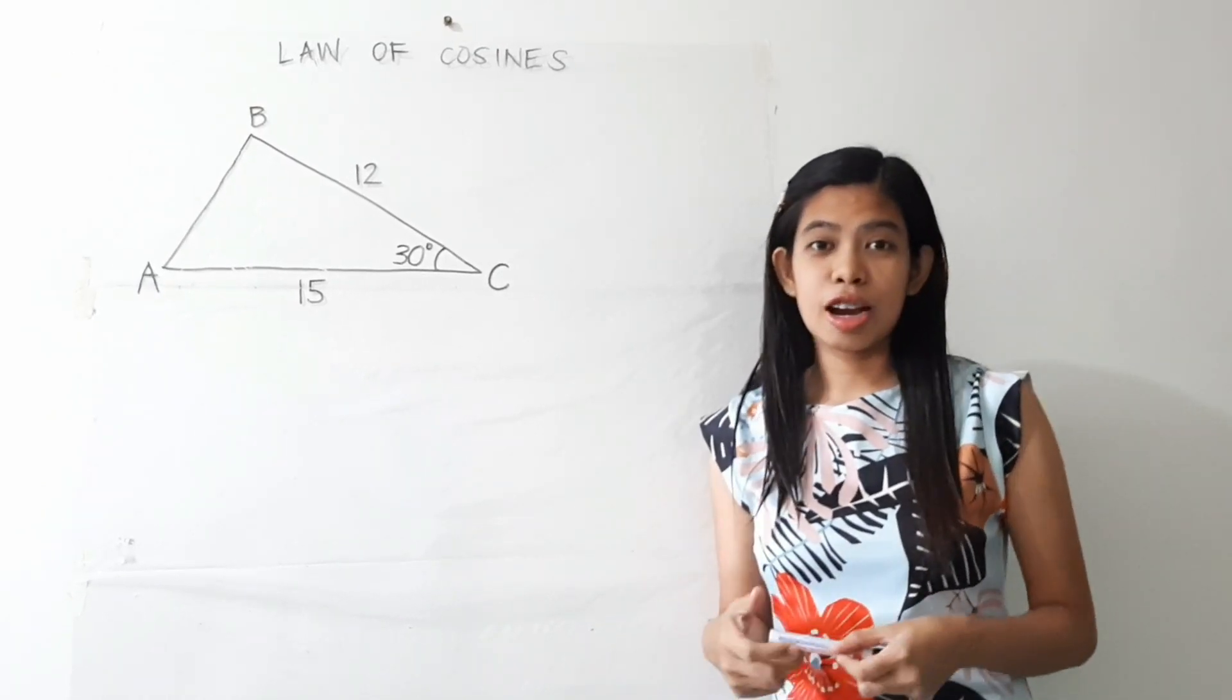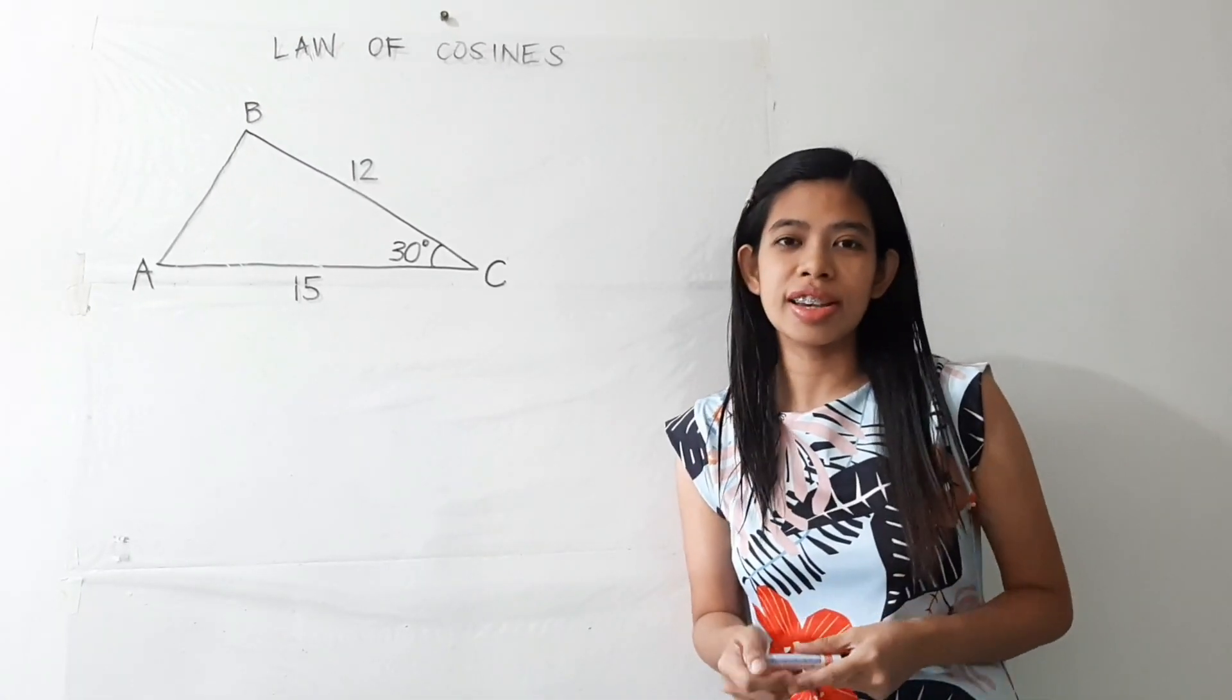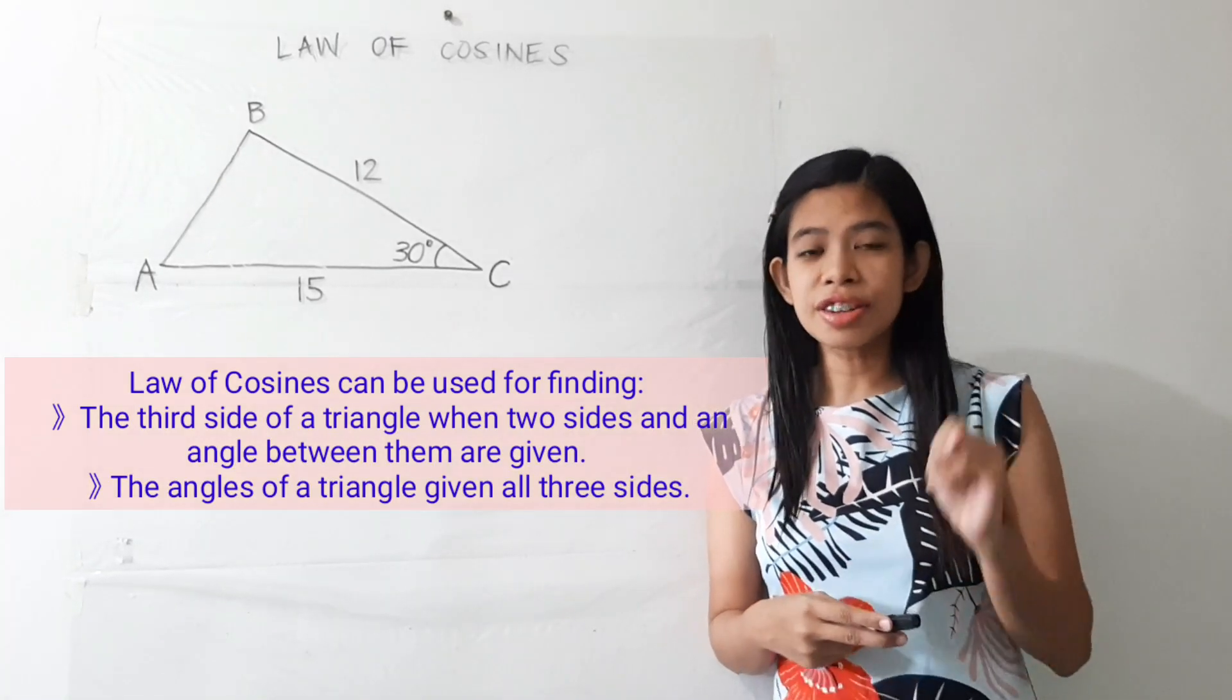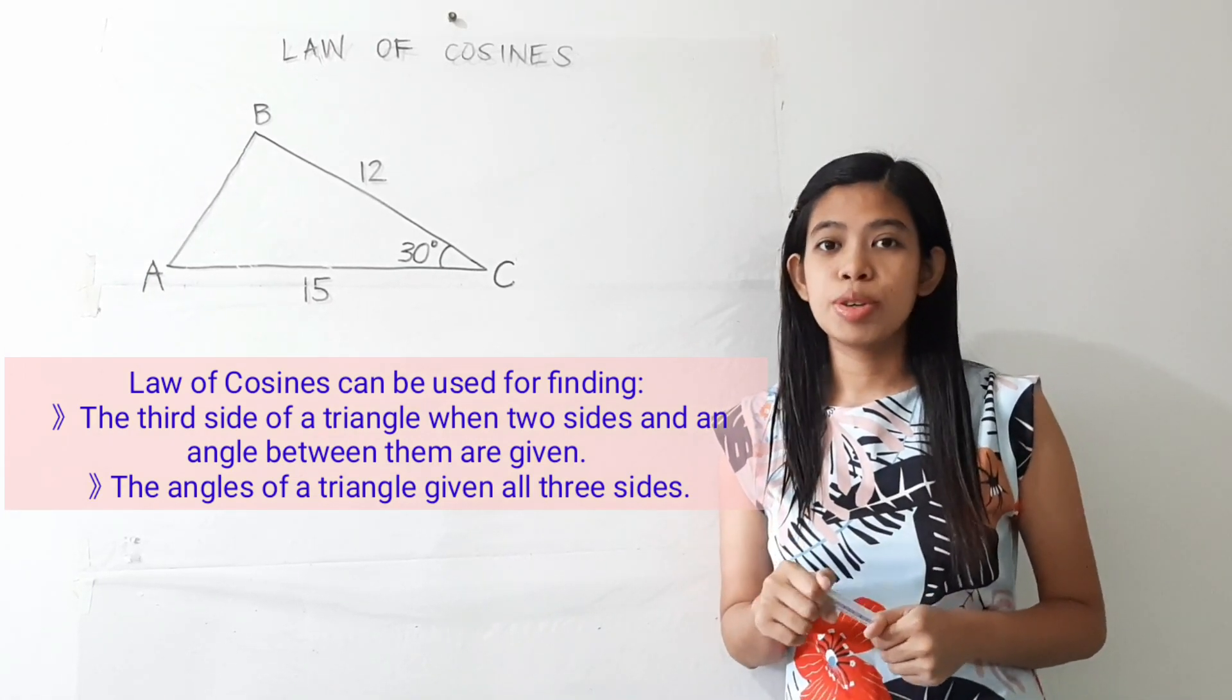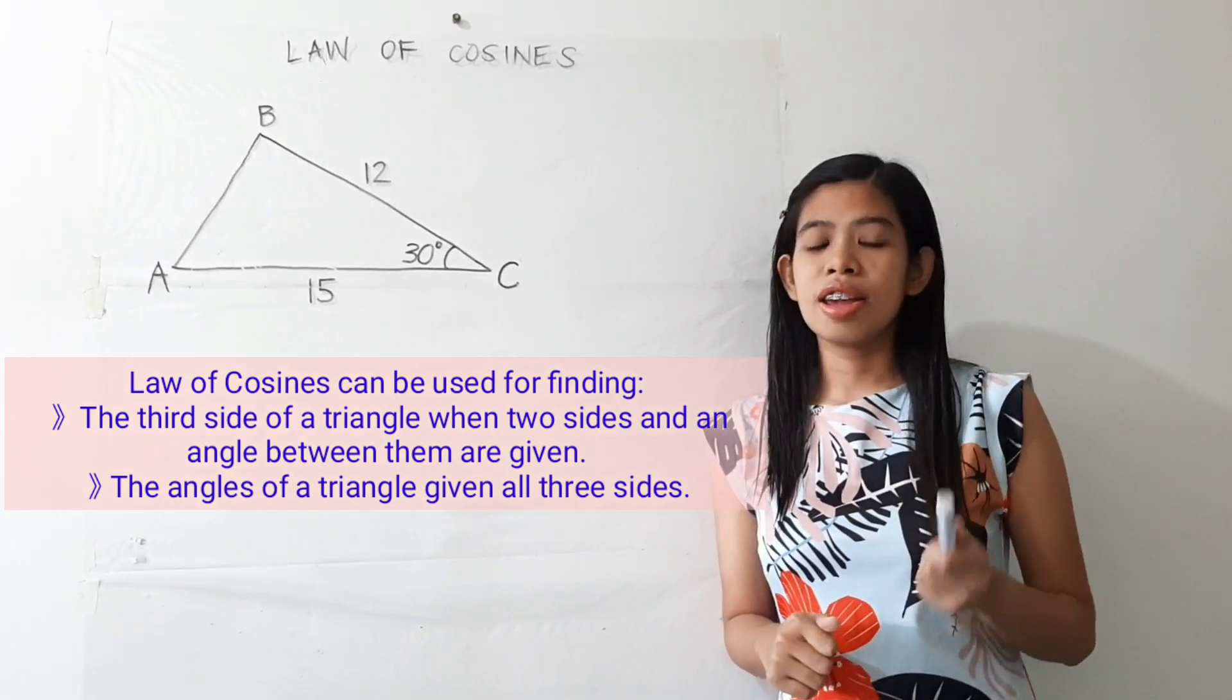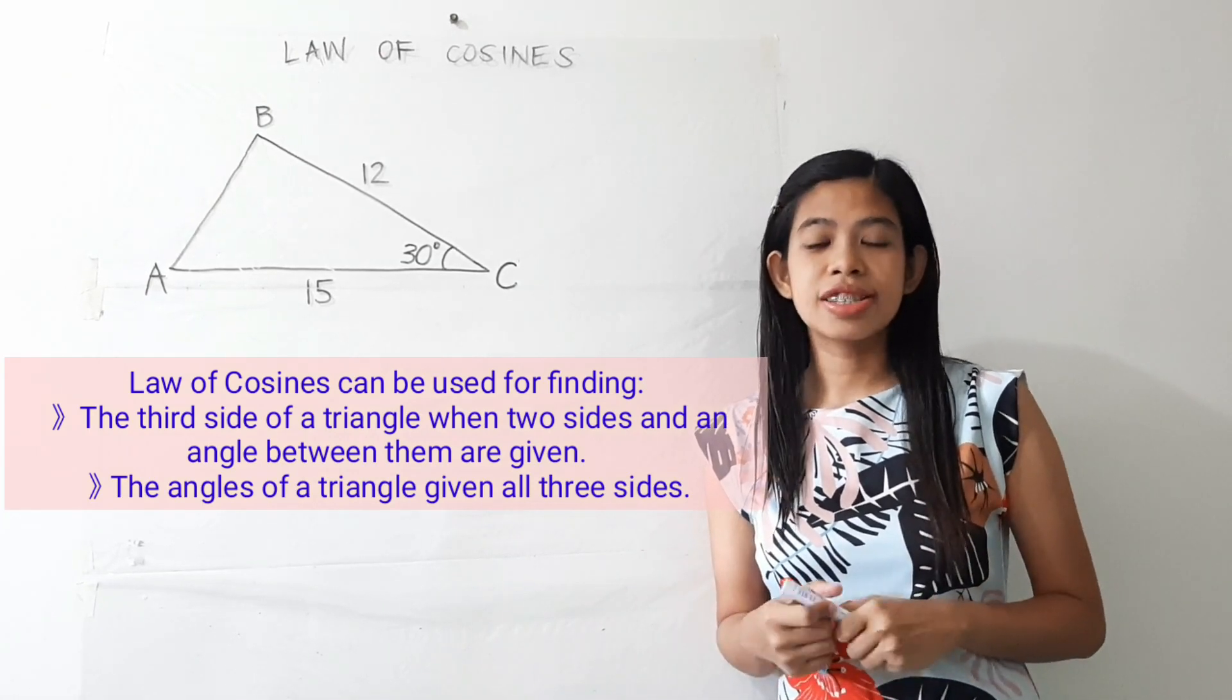So last time we had discussed how to use the law of sines in oblique triangles and now we are going to use law of cosines. So law of cosines can be used for finding the third side of a triangle with two sides and an angle between them which are already given. And we may also use this in finding the angles of an oblique triangle with all the three sides given. So let's get started.